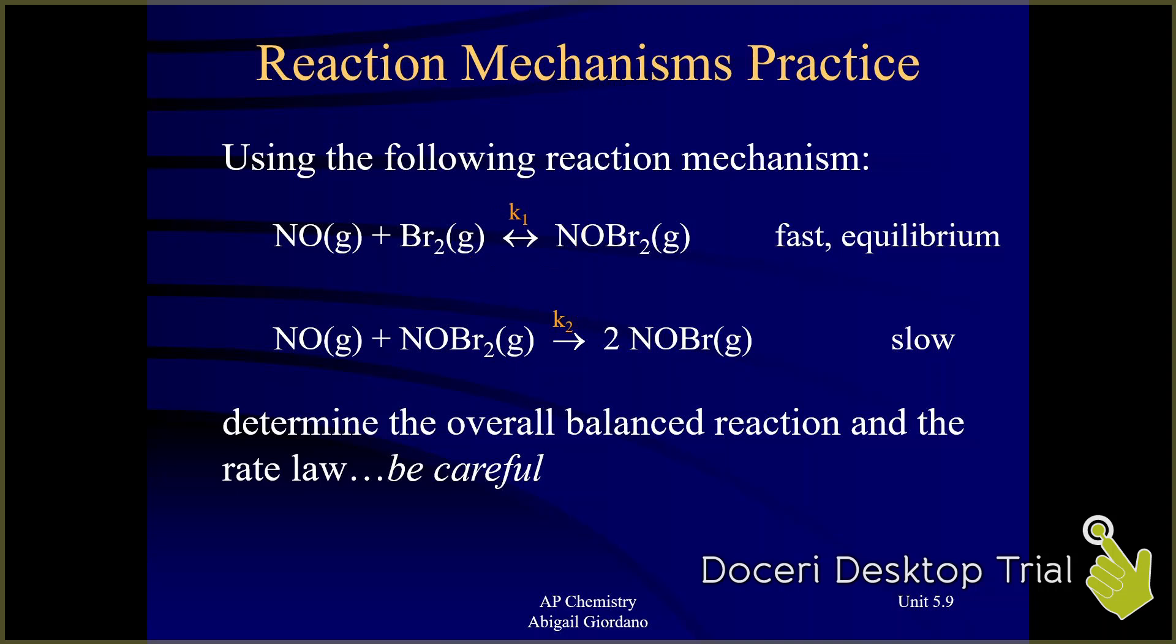But there's two different rate constants, K1 and K2. If you'll notice what we're asked to do here, it says determine the overall balanced reaction. That does not make a difference whether the slow step is first, second, third, that doesn't matter. The overall balanced reaction, that method of determining that is the same as we've been doing.